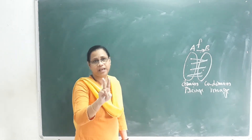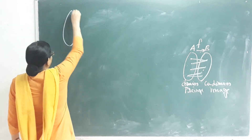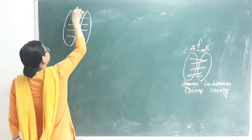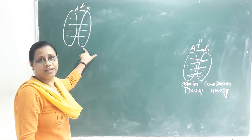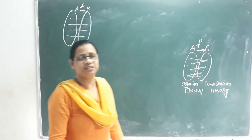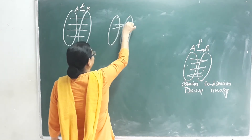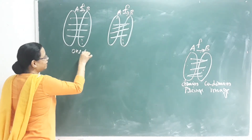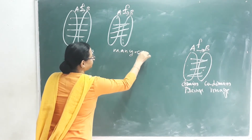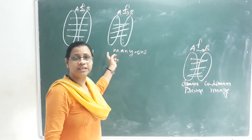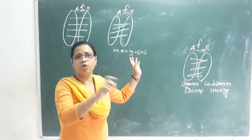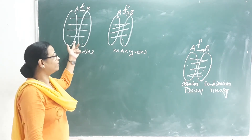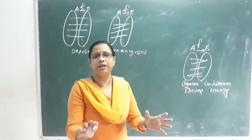Functions are of two types: one-one functions and many-one functions. In a one-one function, every domain element corresponds to exactly one unique image. In a many-one function, multiple domain elements can share the same image. These are the two categories based on how domain elements map to images.